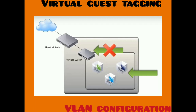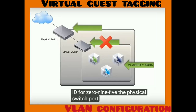The virtual switch forwards the packet from the virtual machine to the physical switch and will not perform any operation. The port group of the virtual machine should be configured with a VLAN ID of 4095. The physical switch port connecting the uplink from the ESX or ESXi host should be configured as a trunk port.